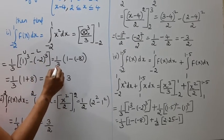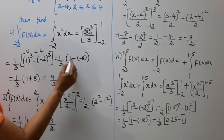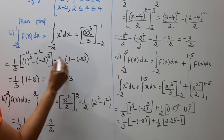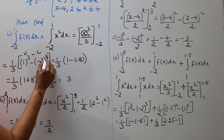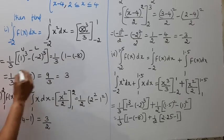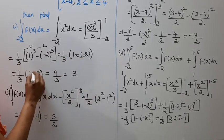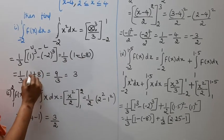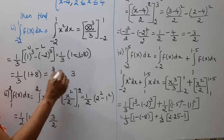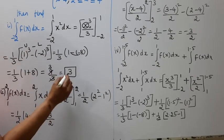Lower limit is minus 2. So 1 by 3 times bracket 1 cube minus minus 2 cube. 1 cube is 1, minus 2 cube is minus 8. So it becomes 1 by 3 times 1 minus minus 8, which is 1 plus 8 equals 9. Therefore 9 by 3 equals 3. The answer for the first subdivision is 3.